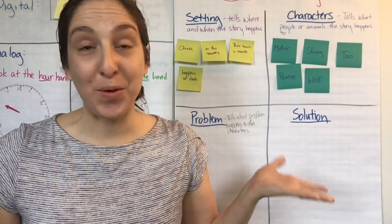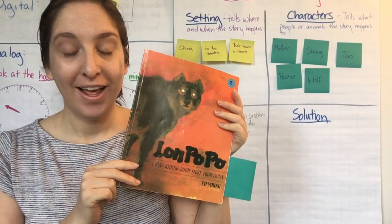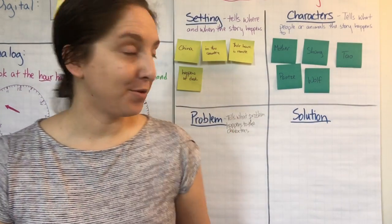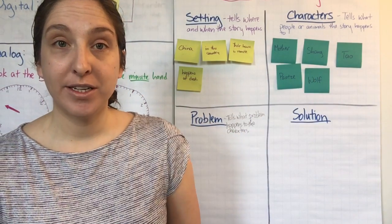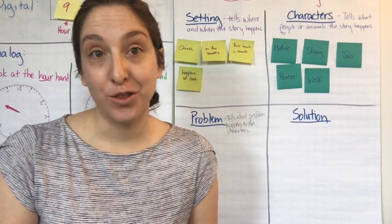Good morning, third graders. We're back for another section of our book, Lon Po Po. So when we last left off, we were talking about the characters. We discovered that the characters in this book were the mother, Shang, Tao, Pao Tse, and the wolf.